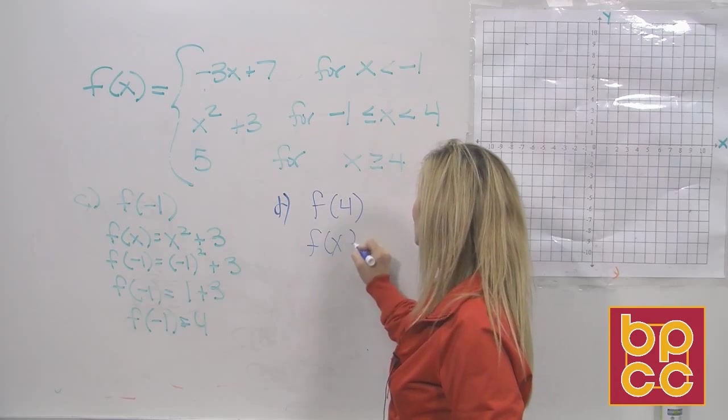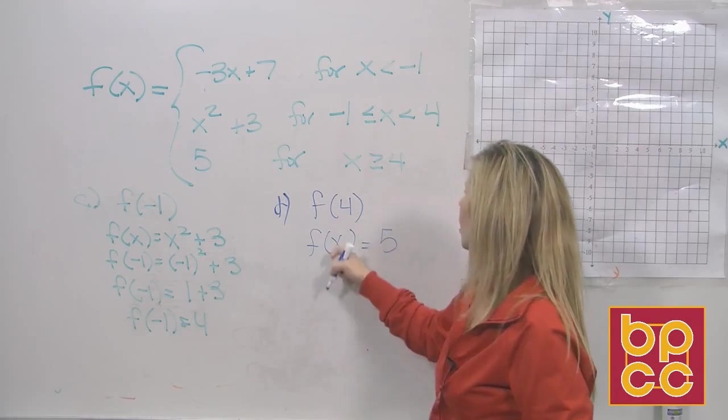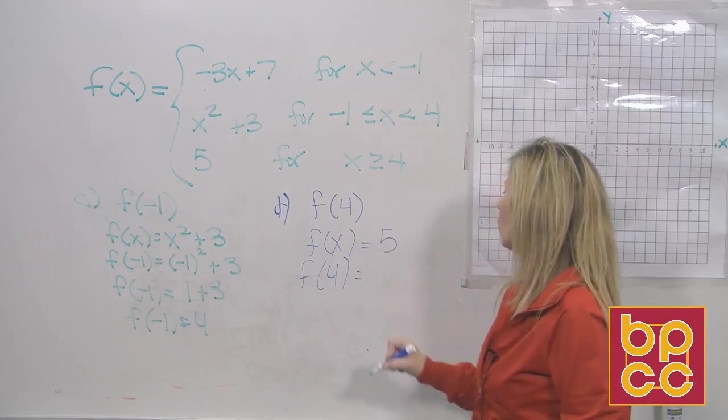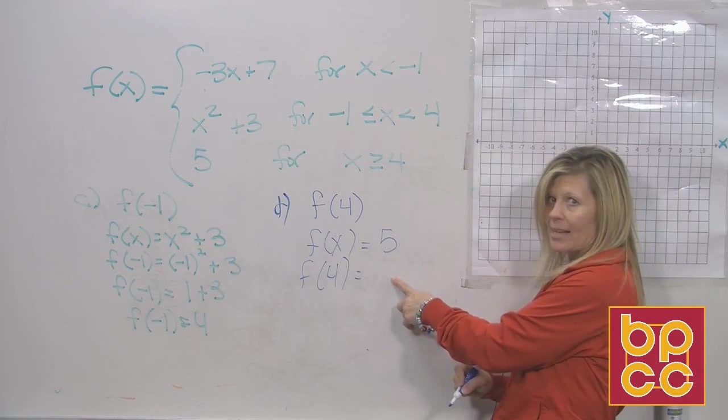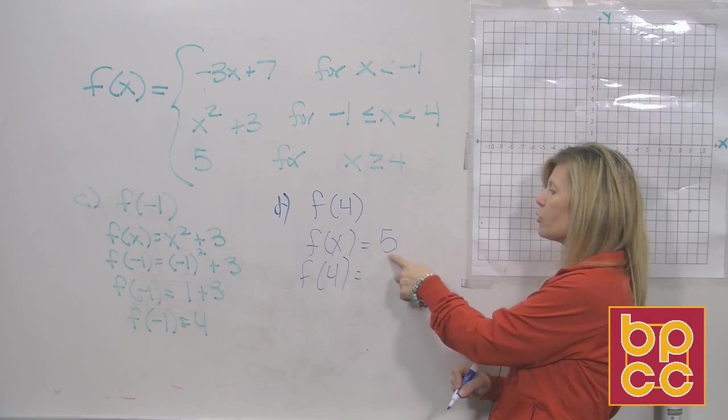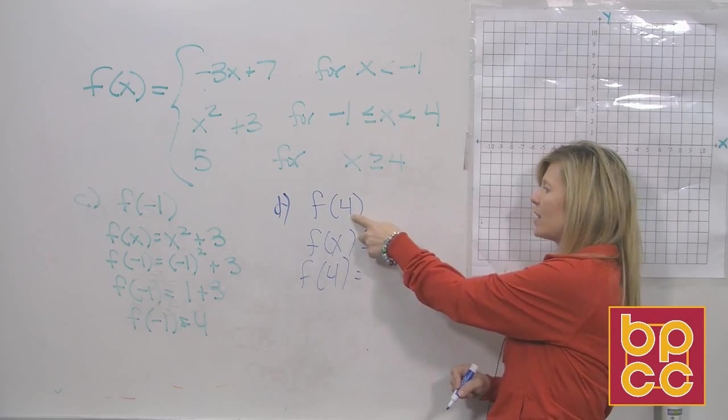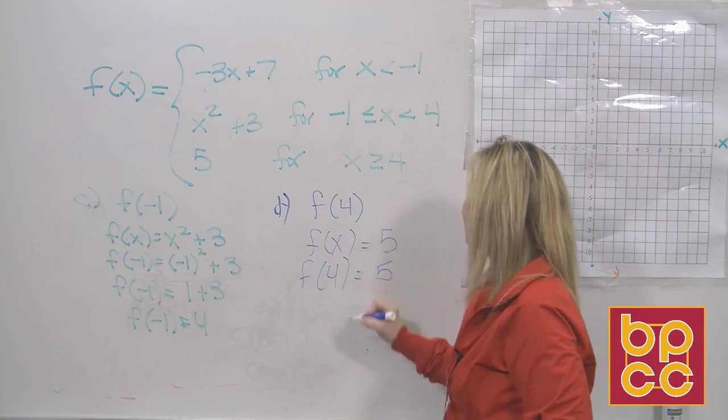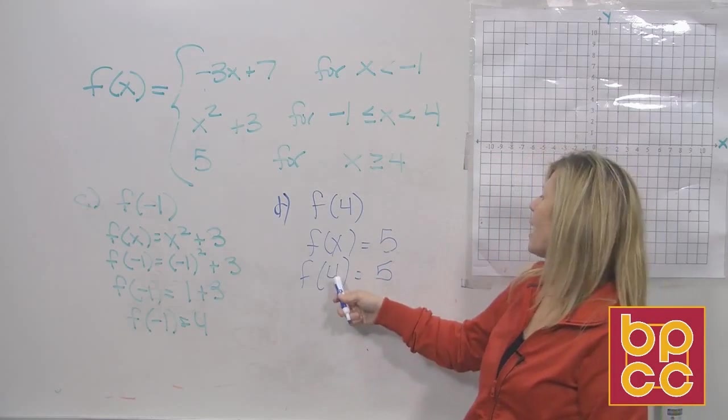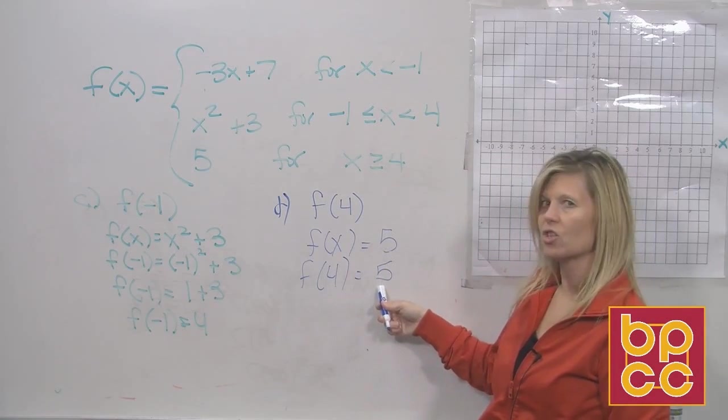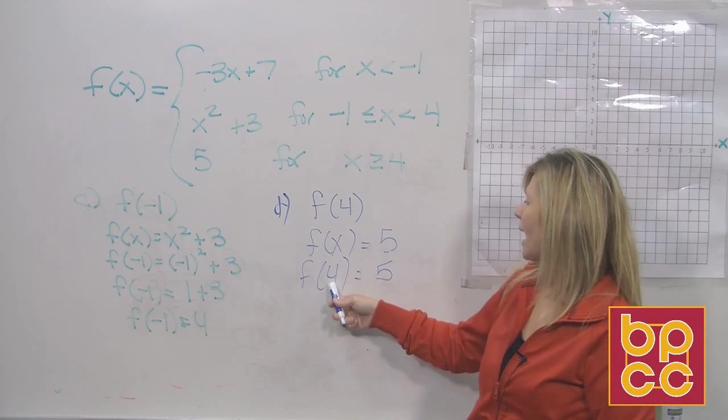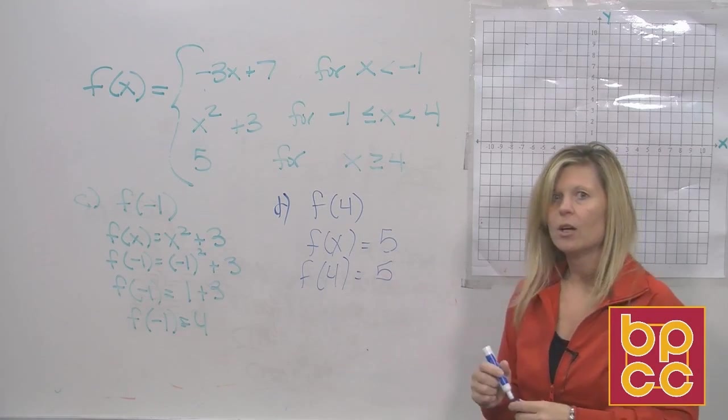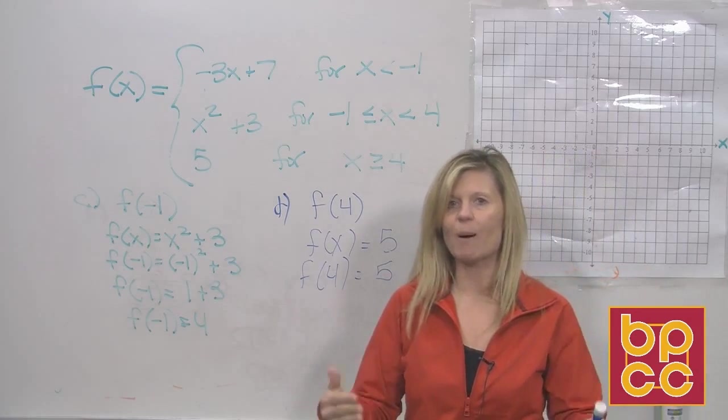So it says f of x equals 5. Again, this 4 represents x. Well, wait a minute. On the right side, do you have an x? No, you just have a constant. So there's no way to take this 4 and substitute it in. Which means the right side is going to stay 5. So it doesn't matter what x is. It's not going to change this value. When x is 4, y is going to stay 5. So that's pretty much all there is to a piecewise function.